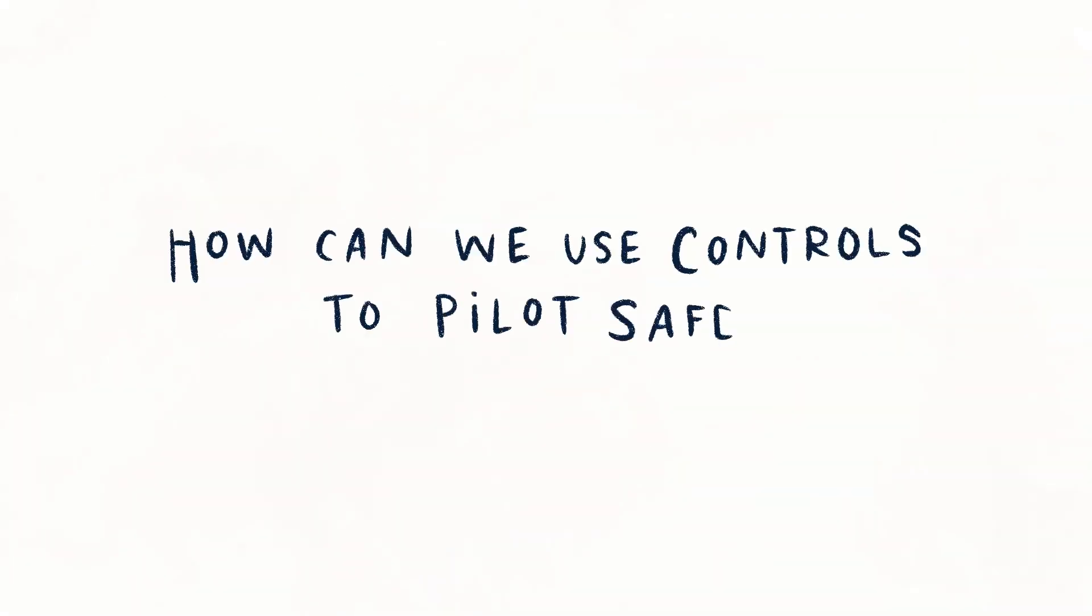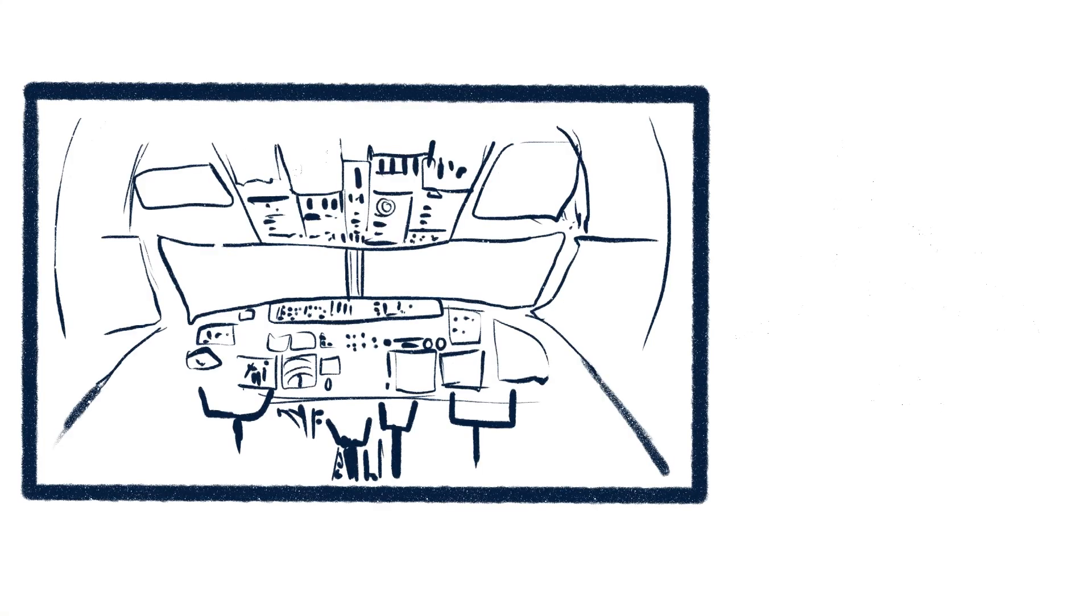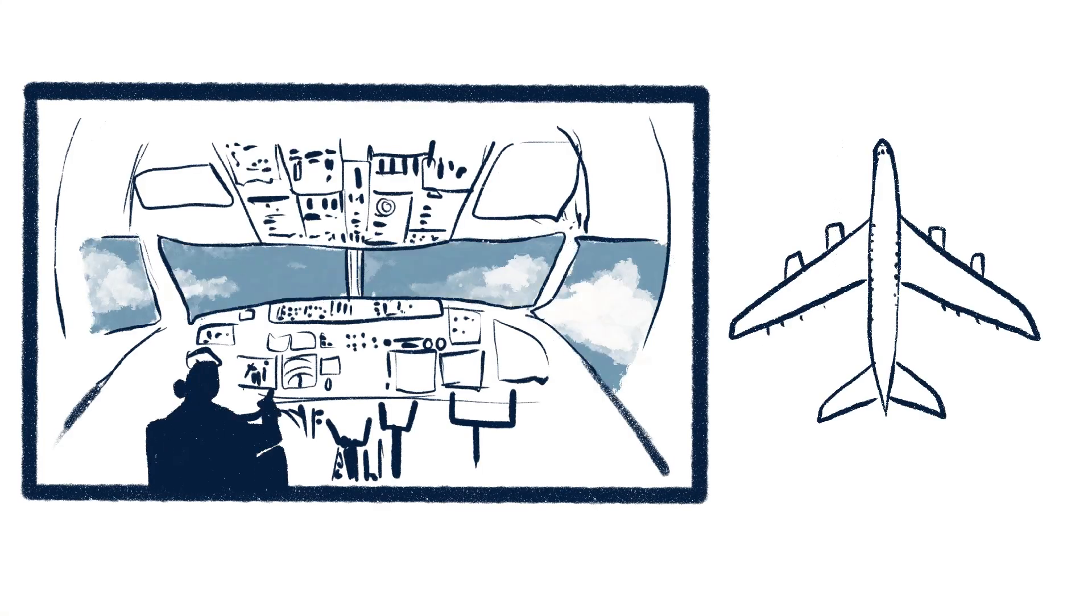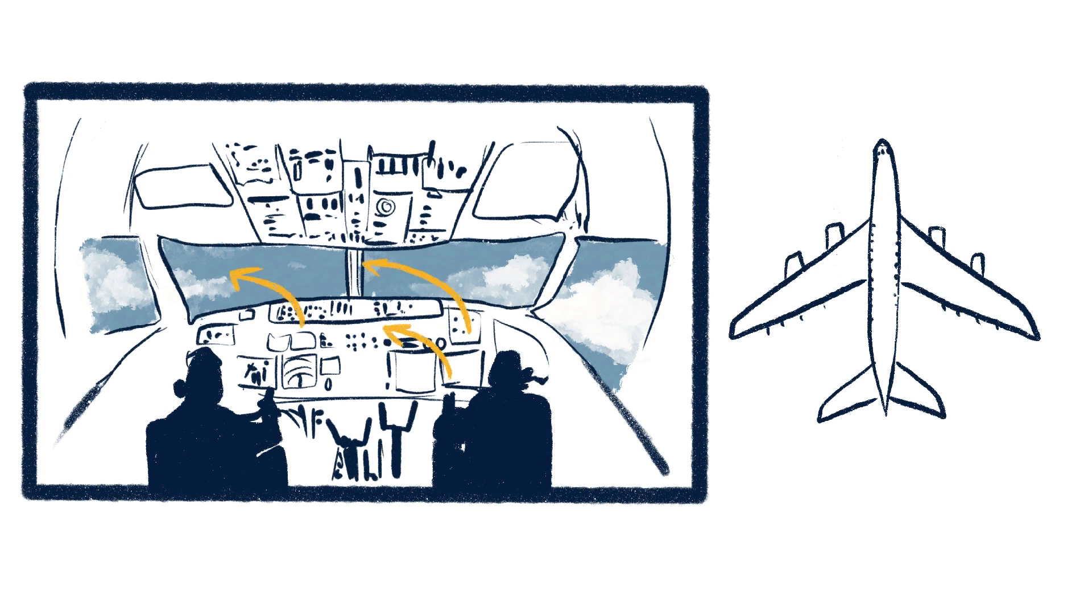How can we use controls to pilot safely? Controls engineers design the brains of aircraft, which convert a pilot's input to the right output. When a pilot banks, controls send a signal from the yoke to the ailerons and rudder, turning the plane.